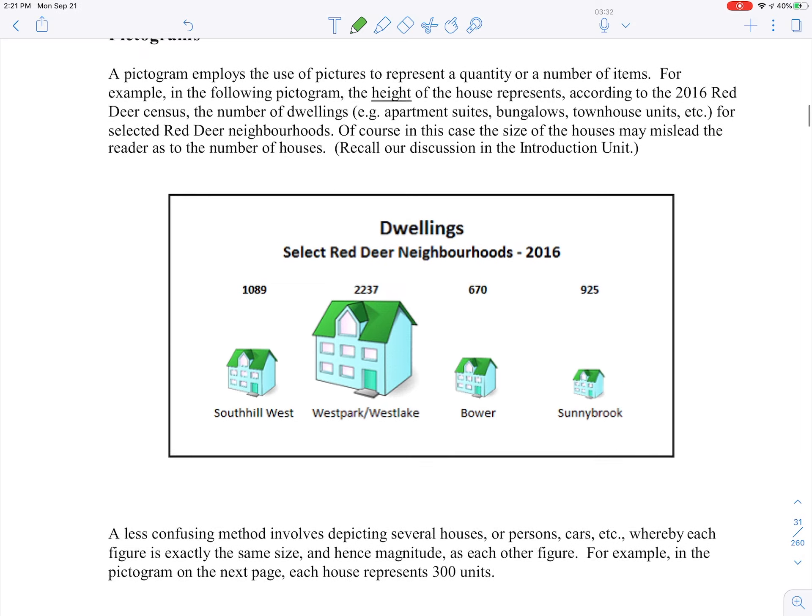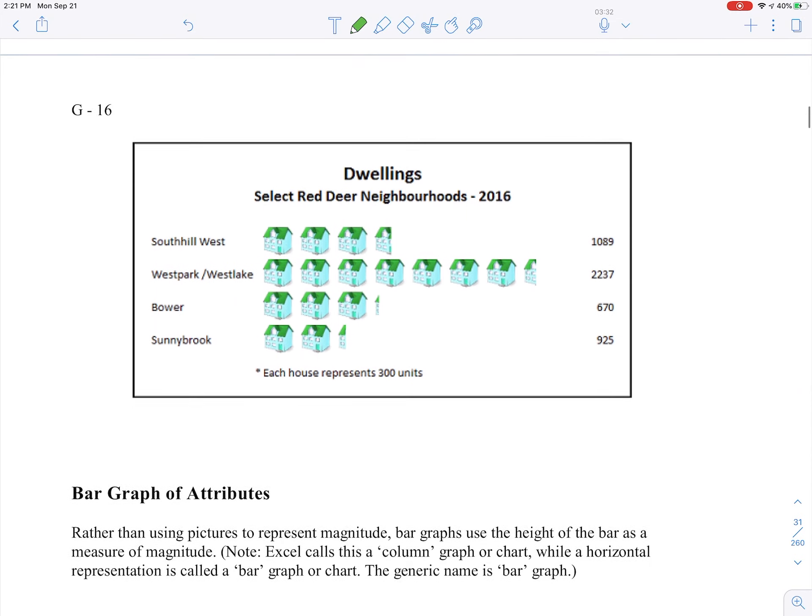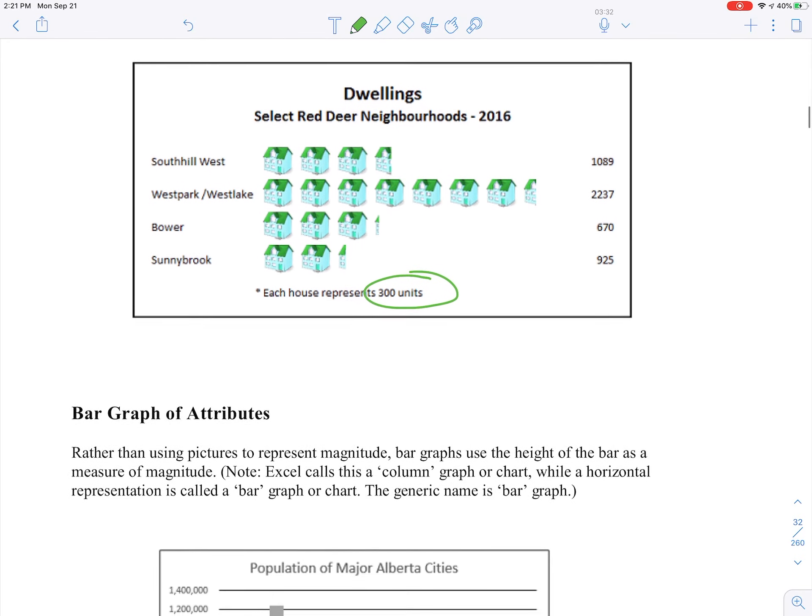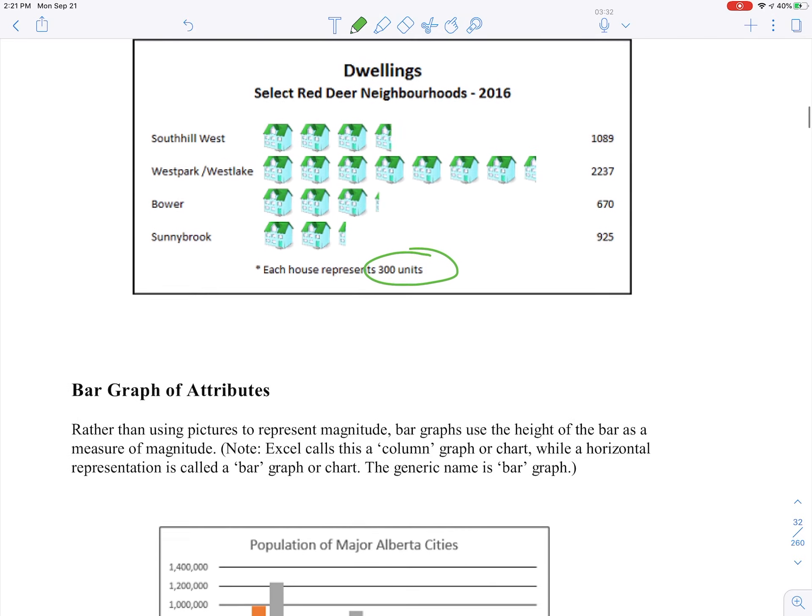A better way of handling that is like this. In this particular case, every house represents 300 units. That's shown down here. So you can see it's a lot easier then to not get fooled by the actual size of the house in terms of not just its height but also its width and perceived depth as well. This is a better way of doing this. This is really no different from what we've got below called the bar graph of attributes. The only difference is that you're using a nice picture there, which is kind of handy.